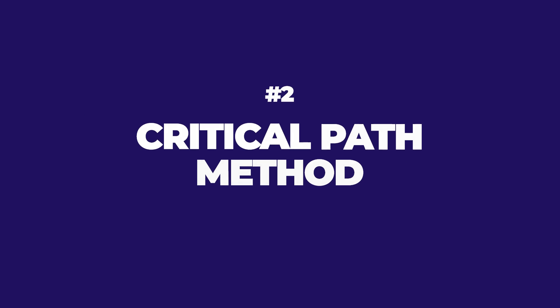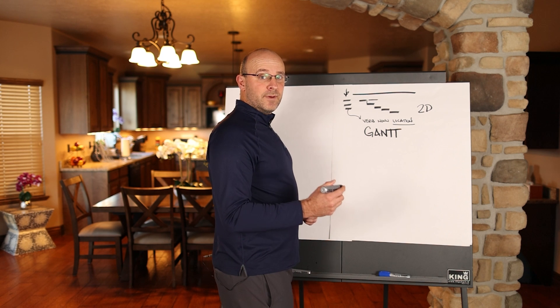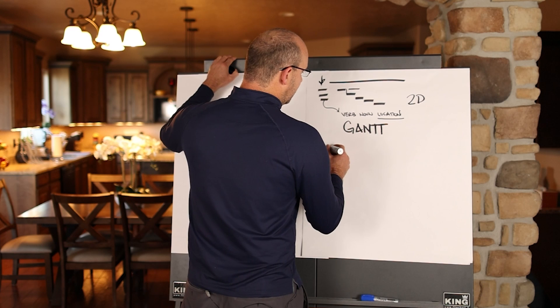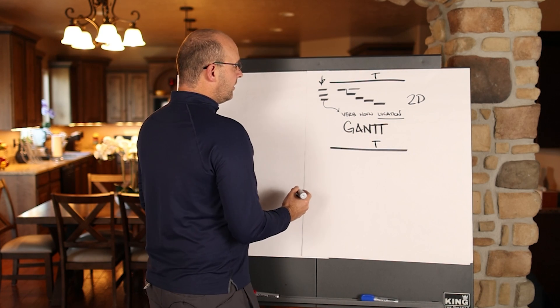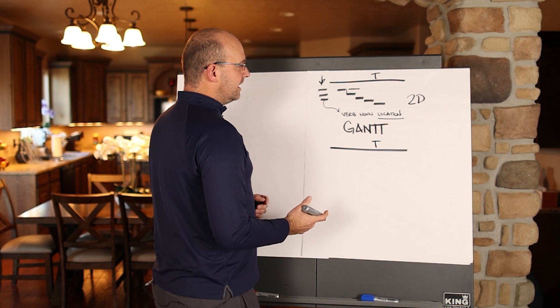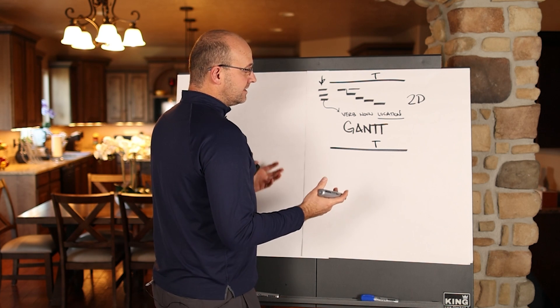The next one I'm going to talk about is CPM. So CPM stands for the critical path method, and what you will have, again, is time on the top, just like in a Gantt chart, and on the left, it's pretty much the same thing. It's in the same format.